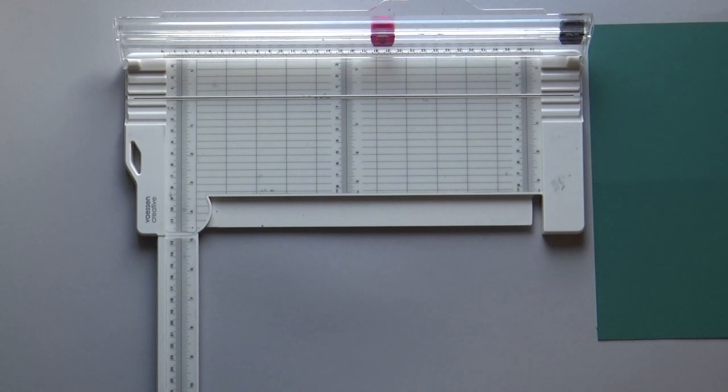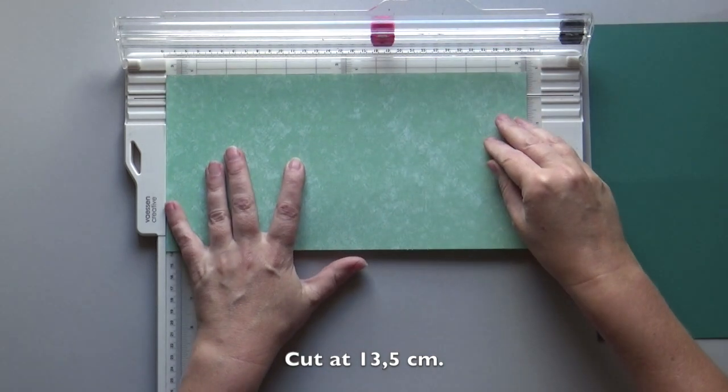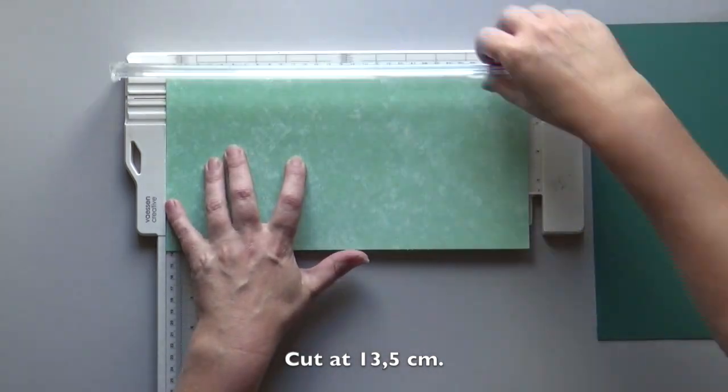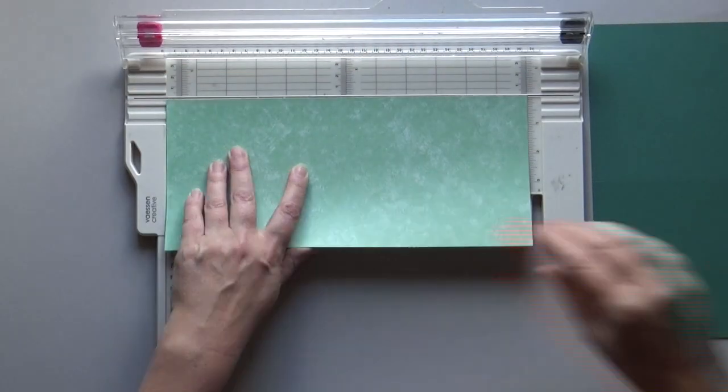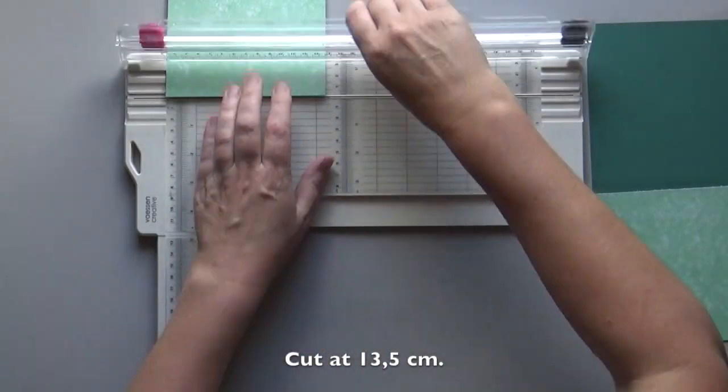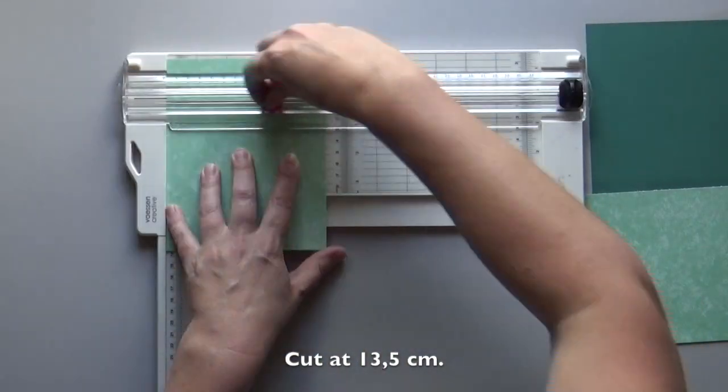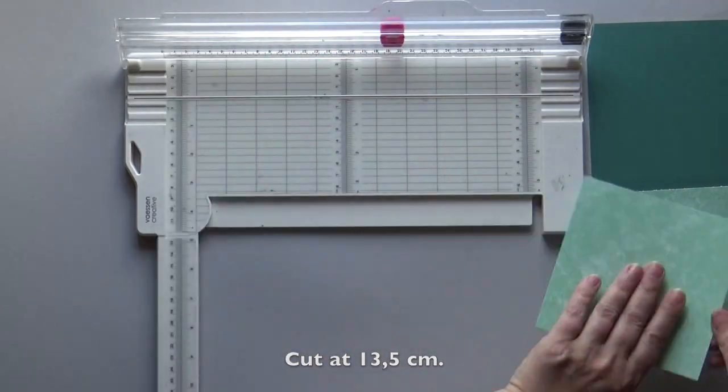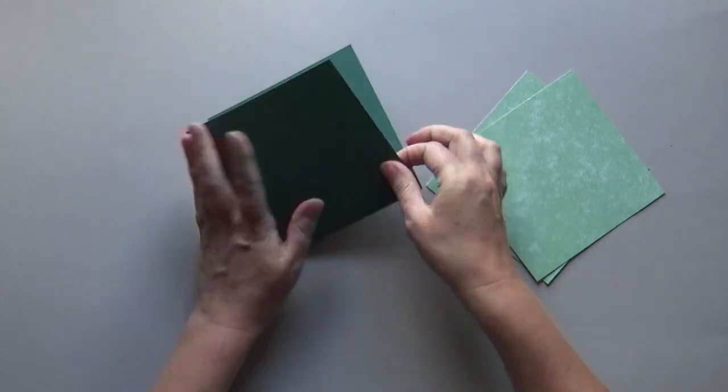I want a layer for this base card. Cut a piece of design paper of 13.5 cm. Turn your paper 90 degrees. Cut twice at 13.5 cm. Fold the base card and glue the two layers on the base card.